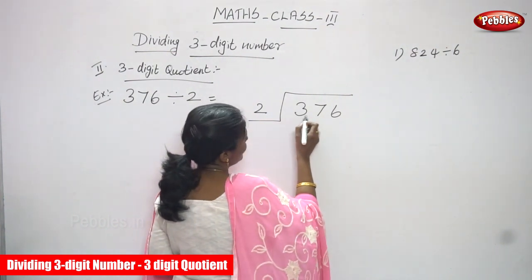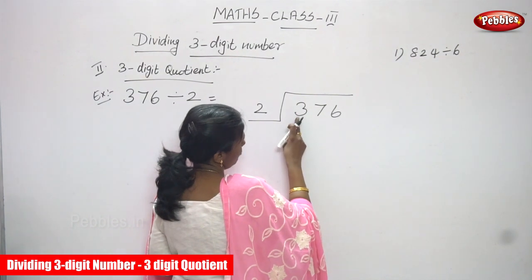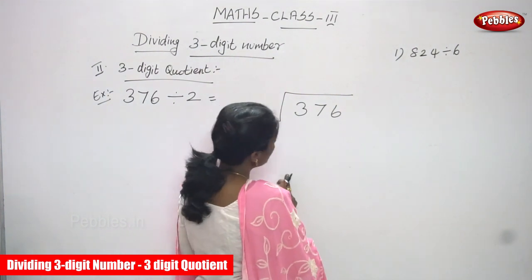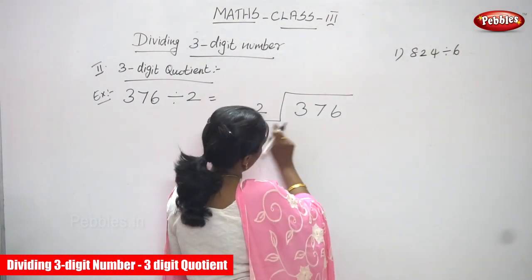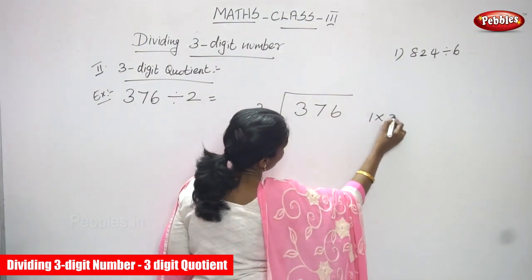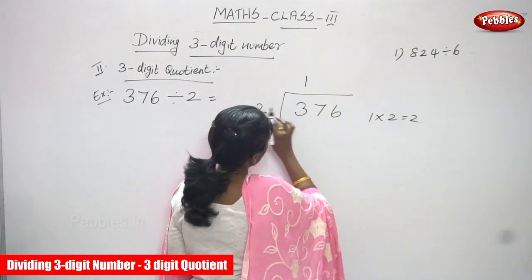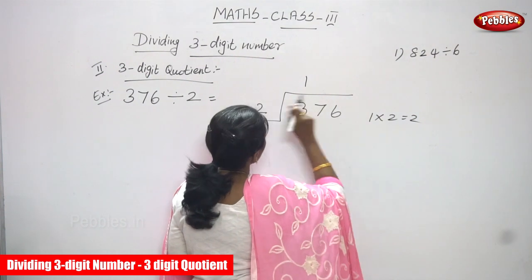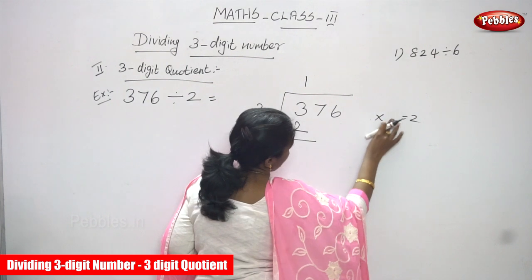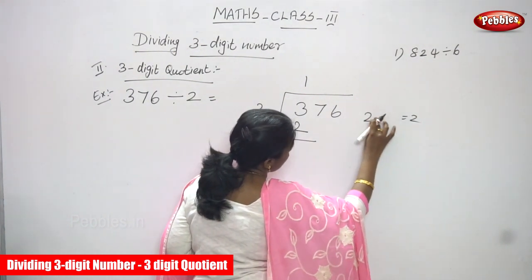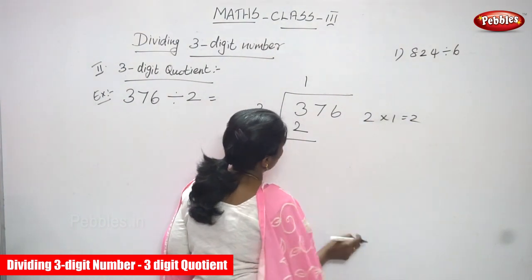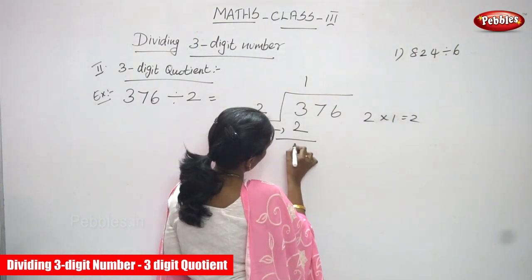So what you are going to do first — this is hundreds, tens, and ones. First you have to take the hundreds place value. So 3 is greater than 2, which means it is enough to divide. So you must use the 2 table. 1 two is 2, so you must write 1 here. 2 into 1 you can get 2. So write 2 below.